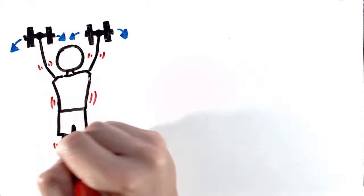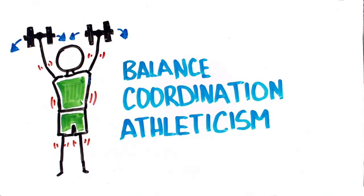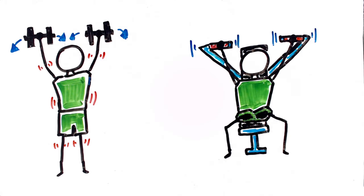For one, the instability of free weights helps build stabilizing muscles, which is great for improving balance, coordination, and athleticism. Sadly, machines usually have you seated or placed into a fixed position that takes instability out of play.